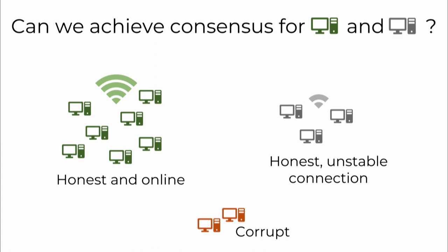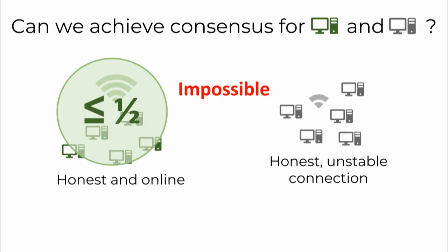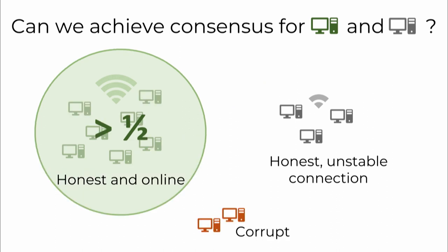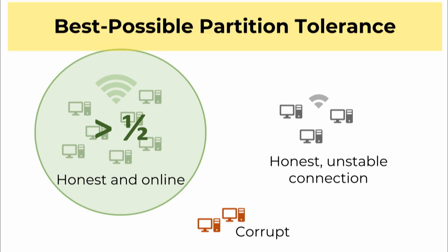Can we achieve consensus for the green and gray nodes? It turns out if you want to achieve this you have to make some assumptions. If the set of green nodes is less than half, we can prove a lower bound showing this is impossible. But if the green set is large — more than half honest and online — then indeed we can reach consensus for both the green and gray nodes. We call this kind of protocol best-possible partition tolerant, because we make a timing assumption about the network while keeping in mind that a minority of nodes can still have an unstable connection and we don't want to penalize them.